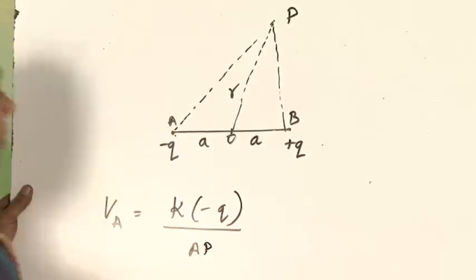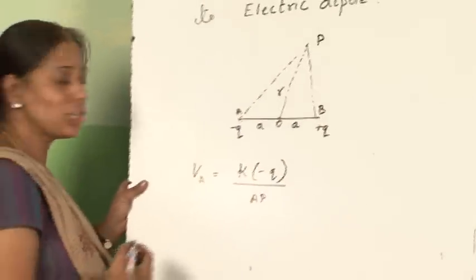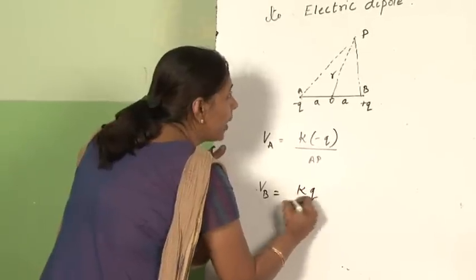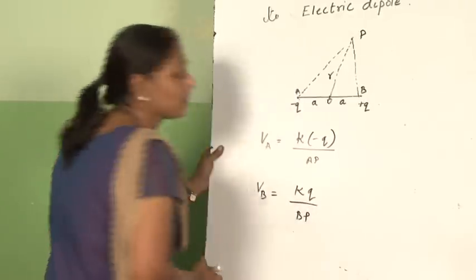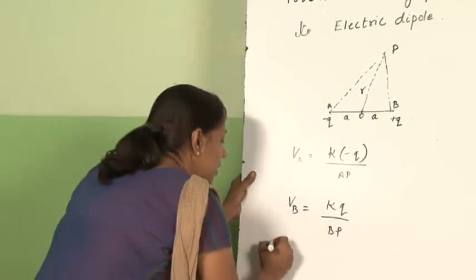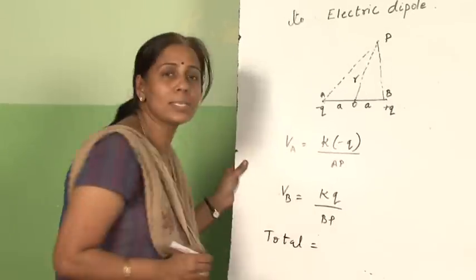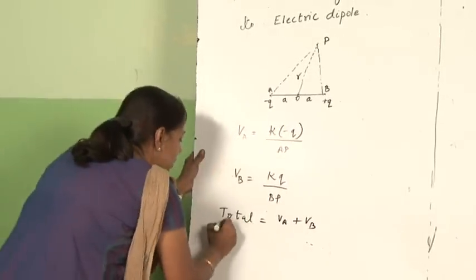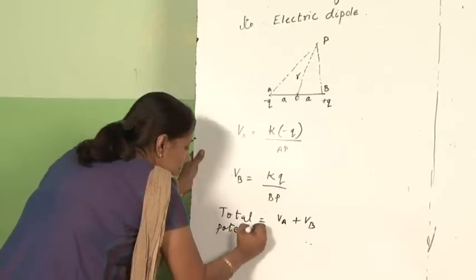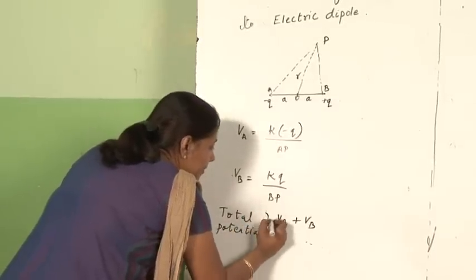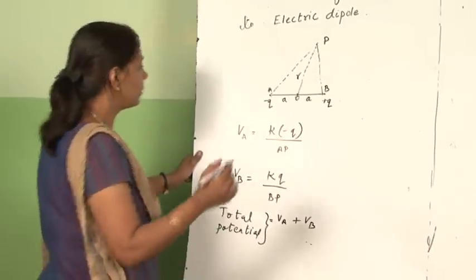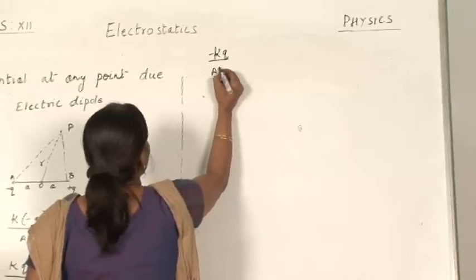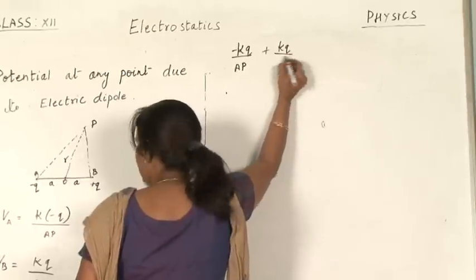The potential due to minus q at P is V_A equal to k of minus q by AP, where AP is the distance between point P and that charge. Similarly, the potential at P due to plus q charge will be V_B equal to k q by BP. Now, what is the total potential? We will add the two — potential is a scalar quantity. So, total V equals V_A plus V_B, which gives minus k q by AP plus k q by BP.